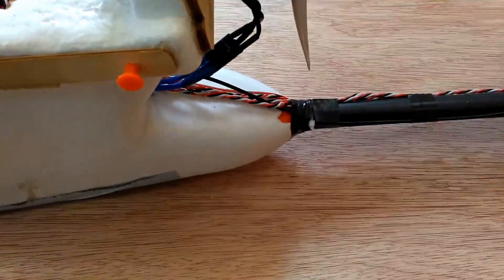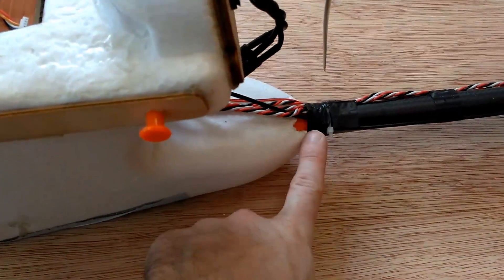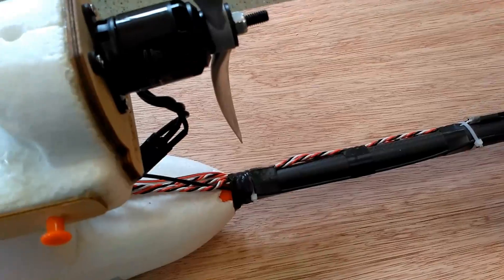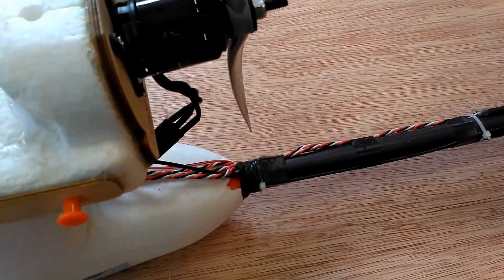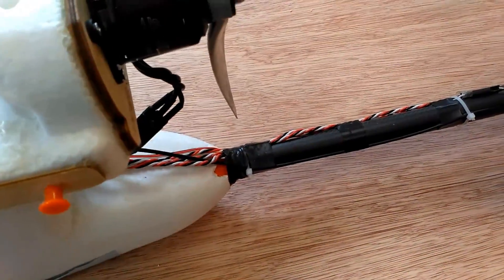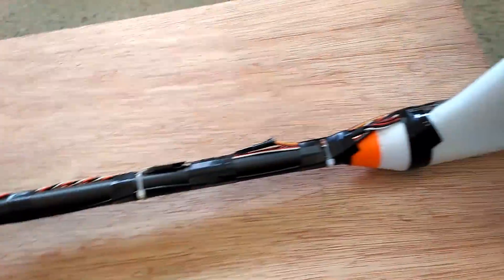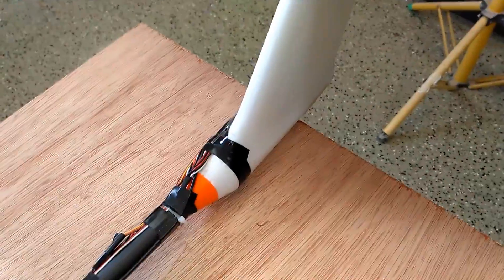One of my terrible accidents resulted in me breaking this carbon spar right here. So to fix it, I had to put a wooden dowel in there, which means I had to put all the wire onto the outside. So it looks terrible, but it's just as strong as it ever was. So all the wires run on the outside down here to the tail.